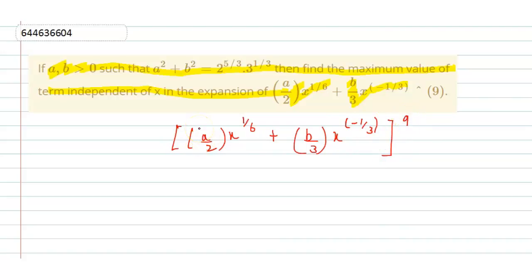So in this term, we have to find the term independent of x. Now we know that r plus 1th term is